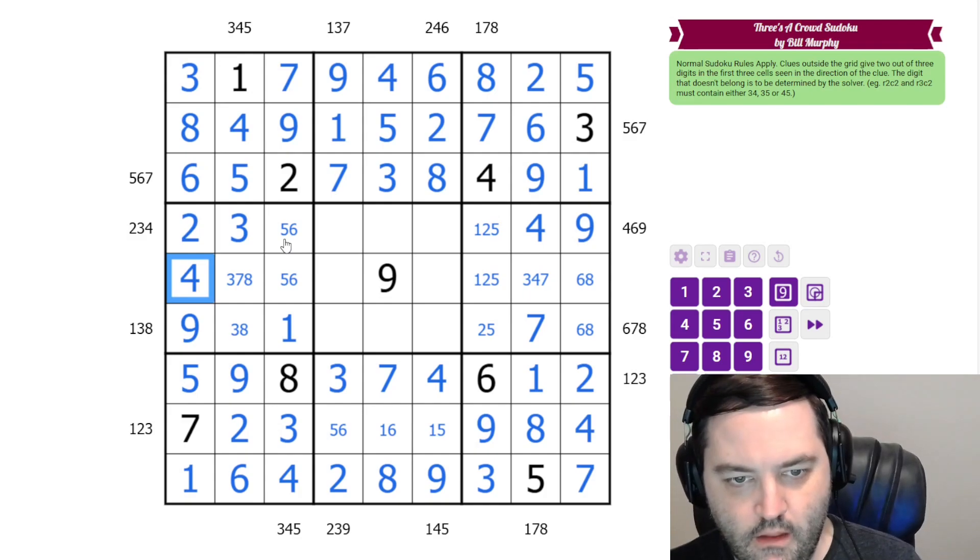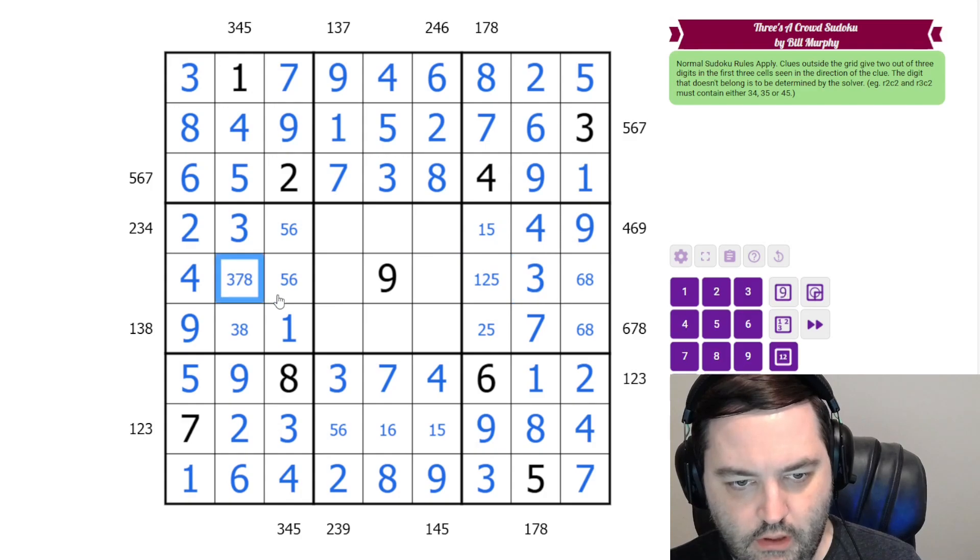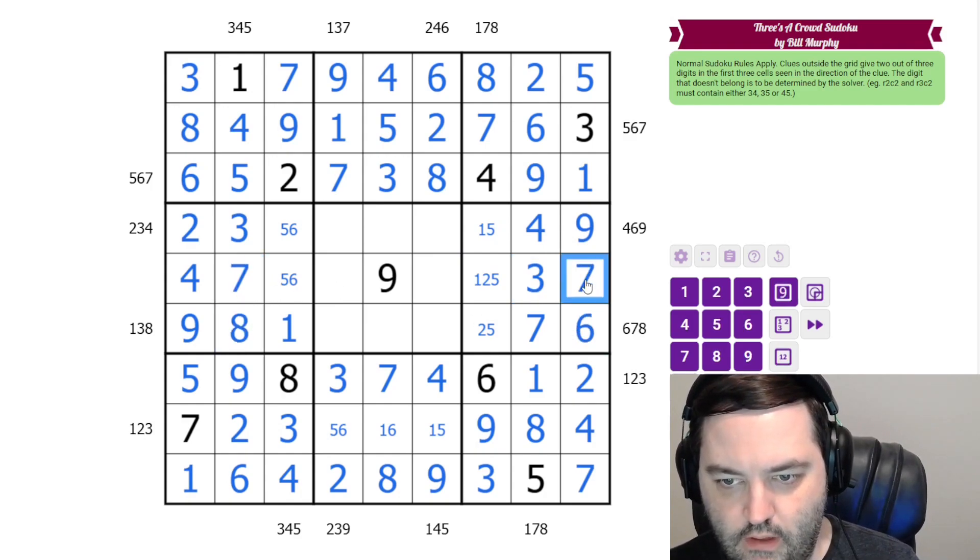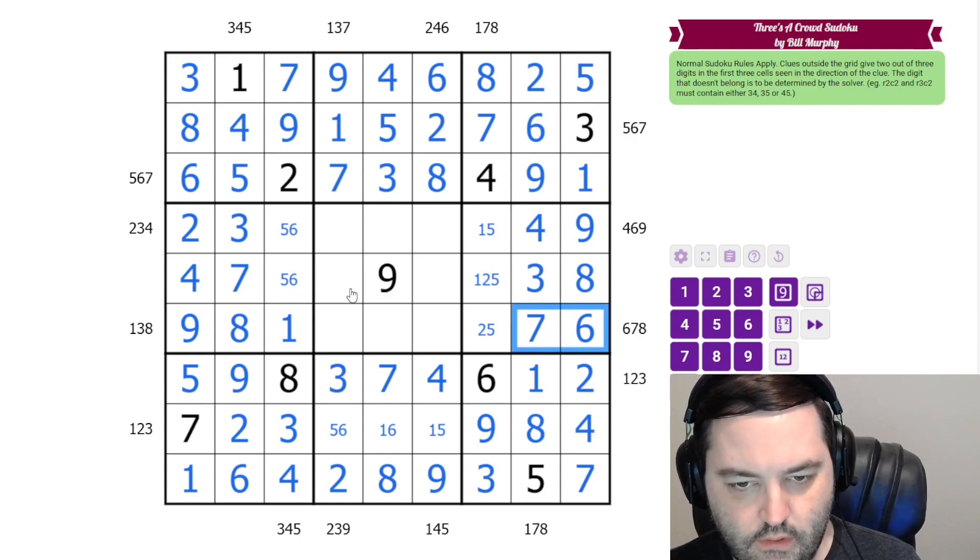This can't be two. This is three. This is eight and seven over here, six and eight. We've got our two digits here, two digits there.